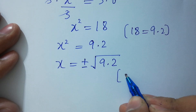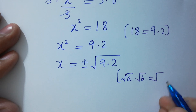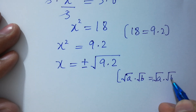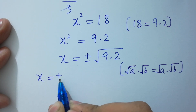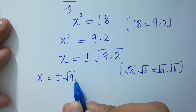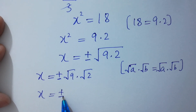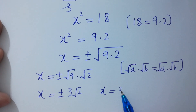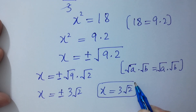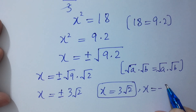Since the square root of a times b equals square root of a times square root of b, it will be equal to x equals plus or minus square root of 9, which is 3, times square root of 2. So we have x equals 3 square root of 2 and x equals minus 3 square root of 2.